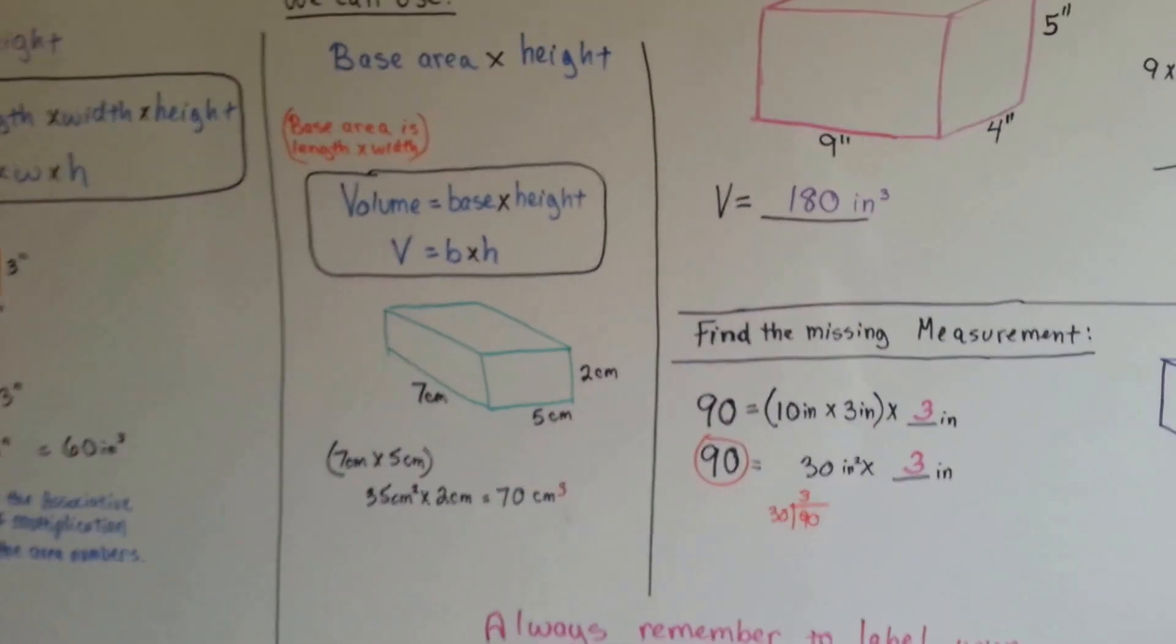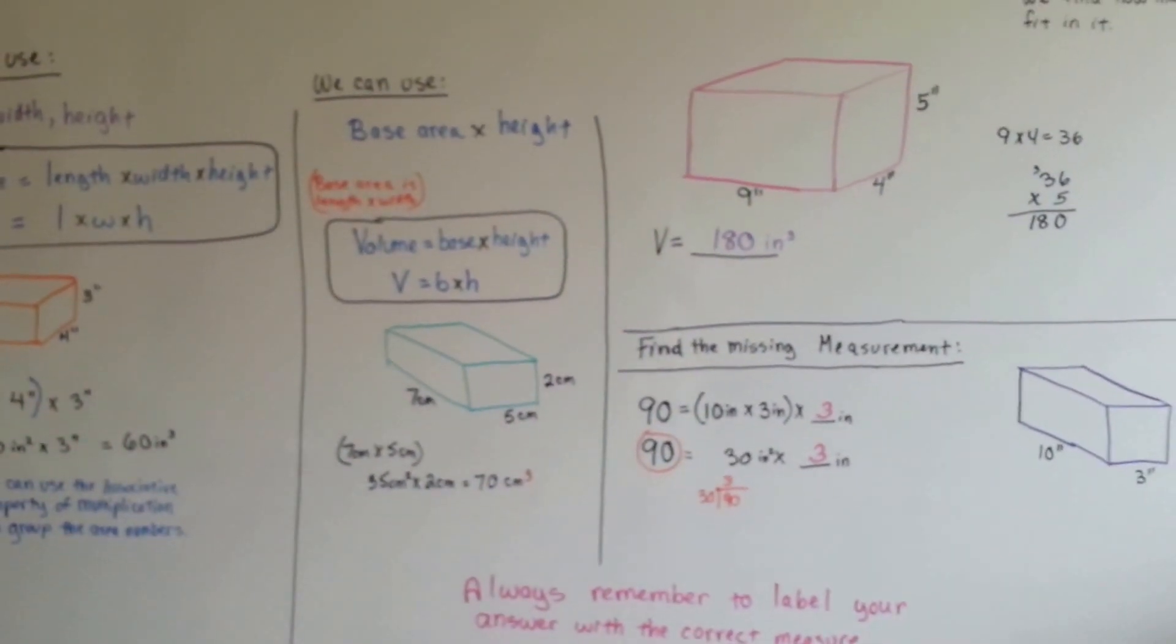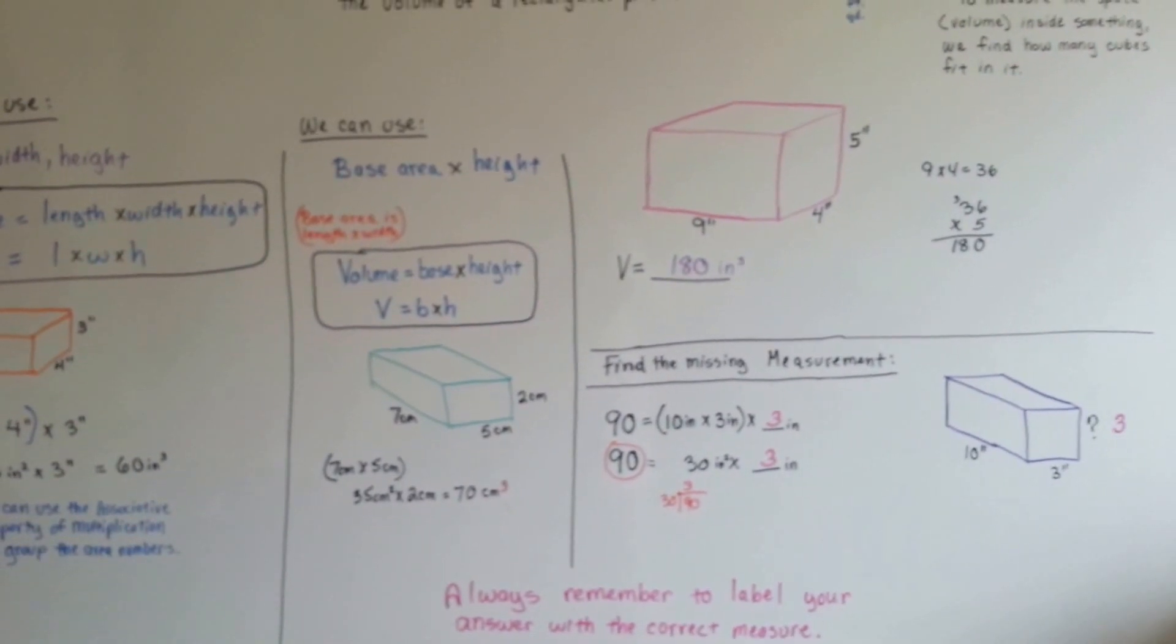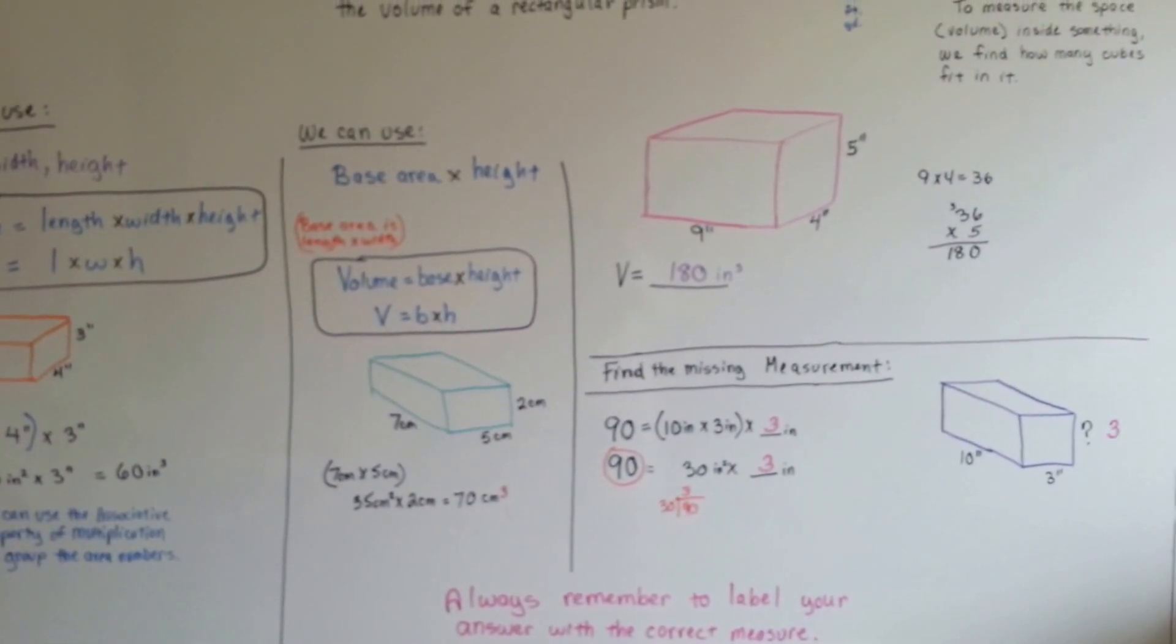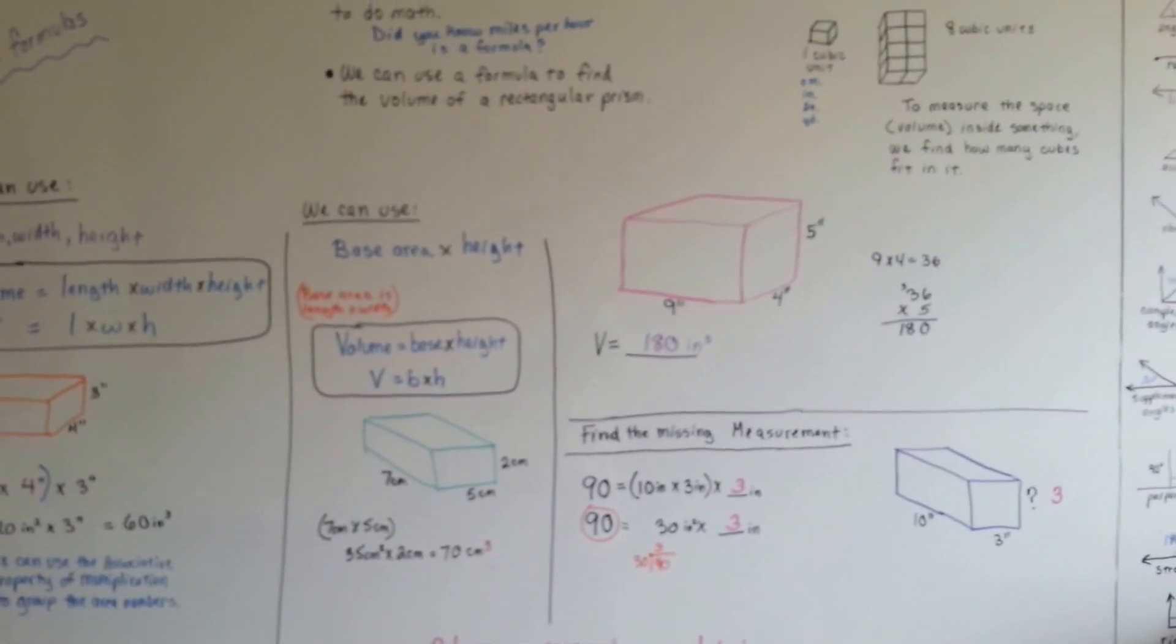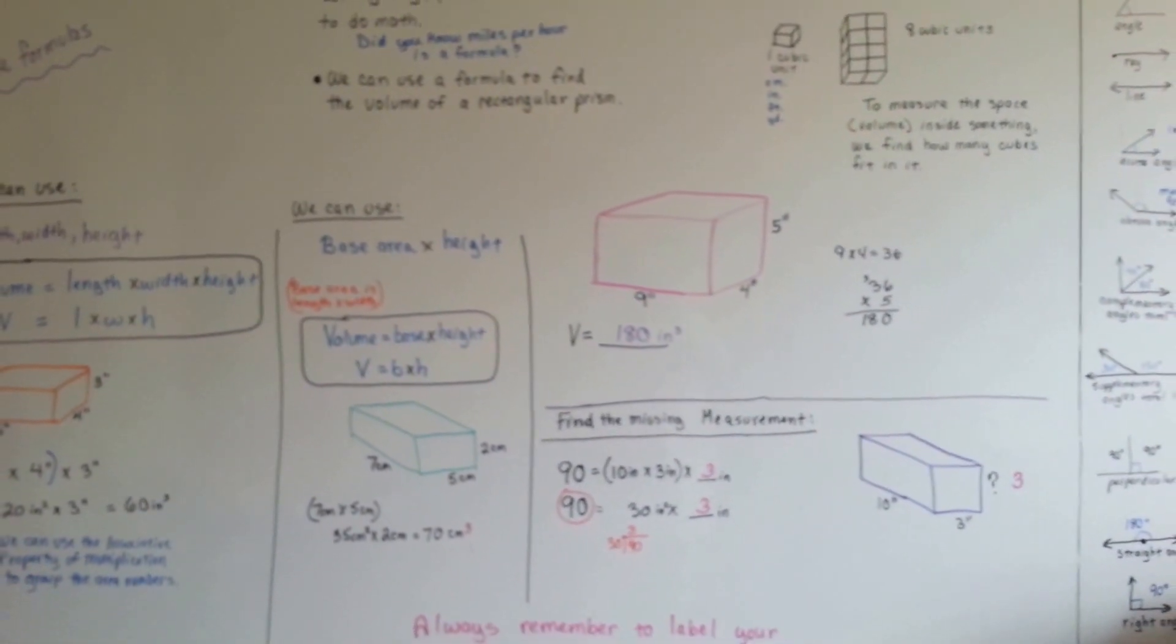So that is how we can use formulas to find volume. We've got V equals L times W times H, or V equals B times H. We're almost through with 5th grade math. I'll see you in the next video. Bye!